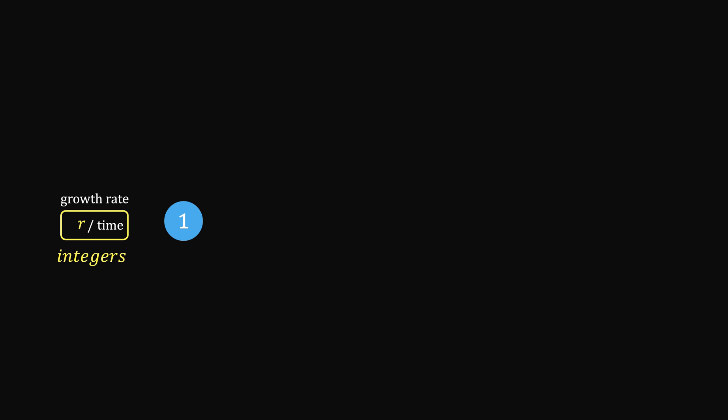Now, what if this rate is not integer? Say it's 1 half. What would it become 1 unit time later?